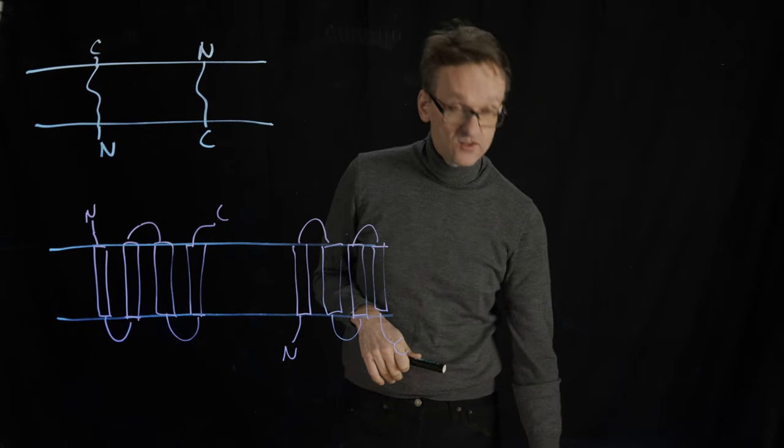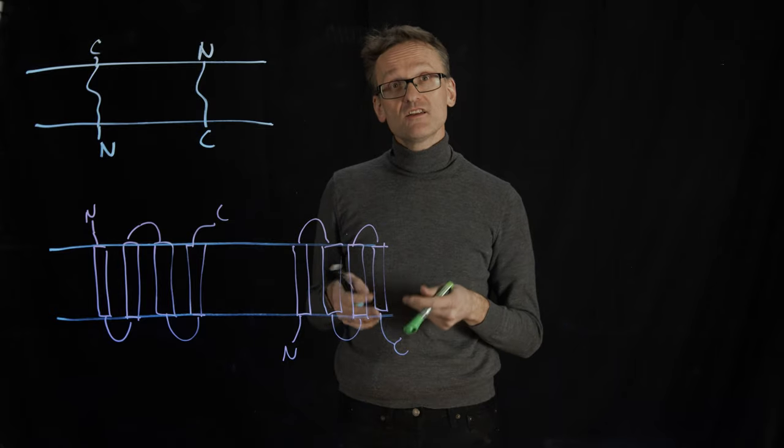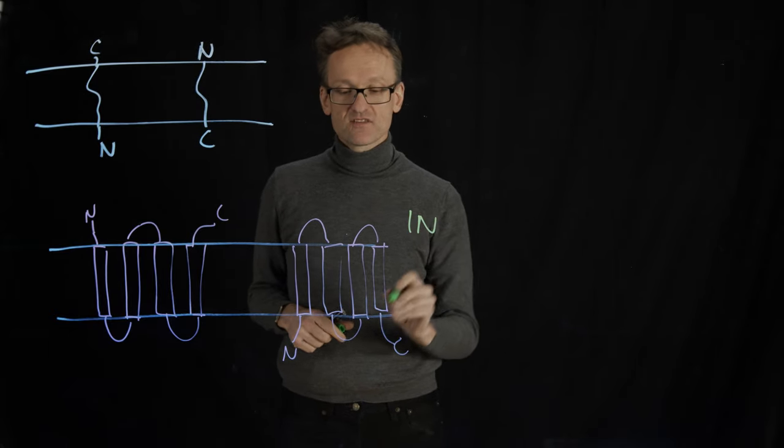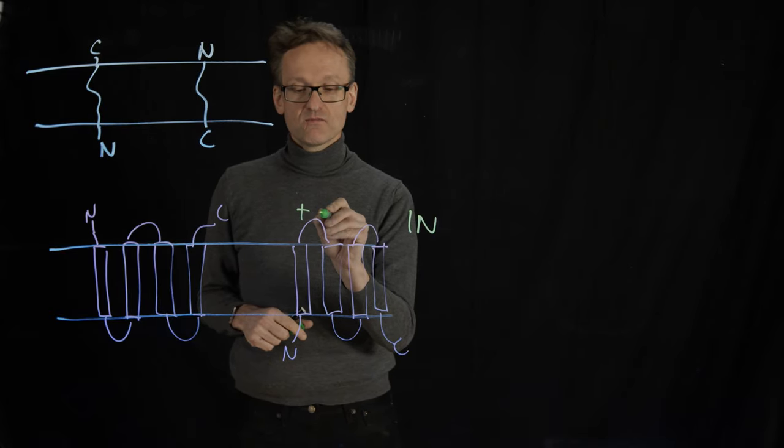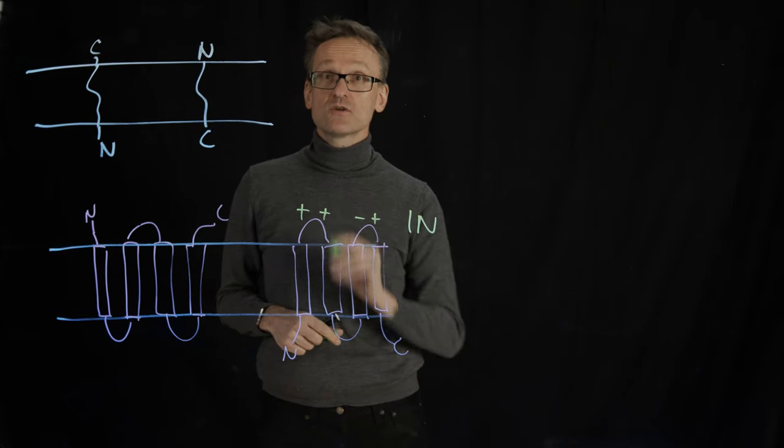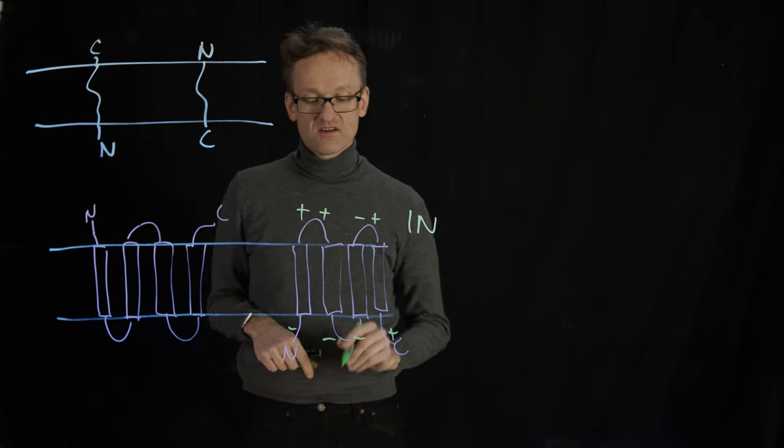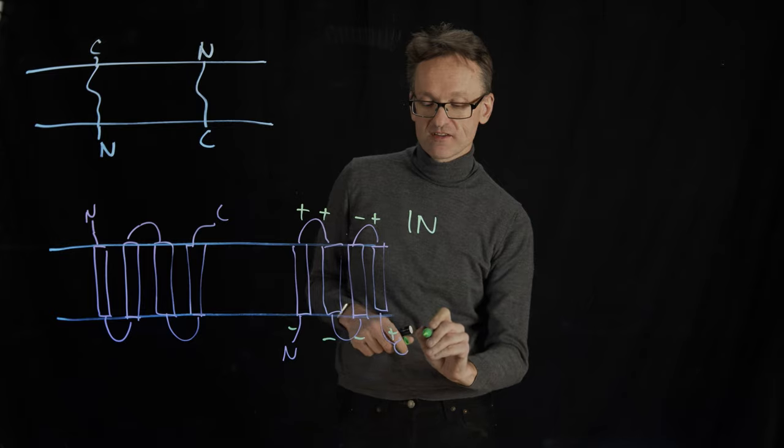In fact, what Gunnar showed is that overall we tend to have positive charges on the inside. So if this is on the inside of the cell, you would have more positive charges and then maybe more negative charges on the outside.